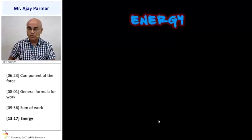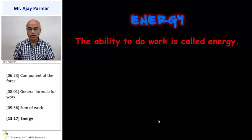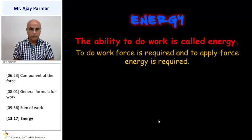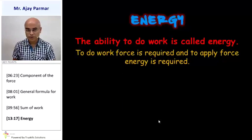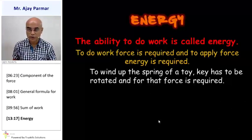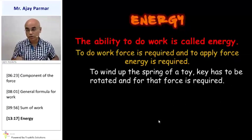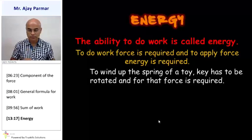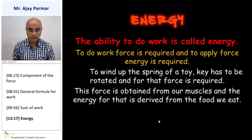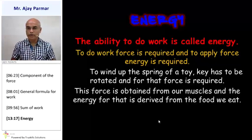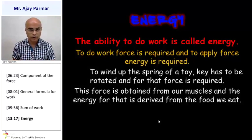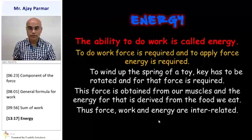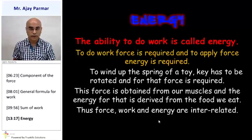Now let us talk about energy. In order to exert force, we require energy. The ability to do work is called energy. To do work, force is necessary, and for force, energy is required. For example, to wind up the spring of a toy or a clock, the key has to be rotated, which requires force, and for that force you require energy — specifically muscular energy. We obtain this muscular energy from the food we eat. So force, work, and energy are always interrelated to each other.